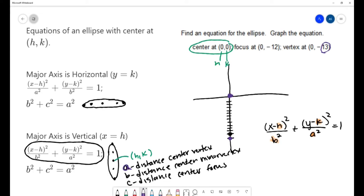So I know that a is 13, and c is the distance between the center and the focus, so that's going to be 12. So c is 12.